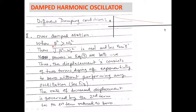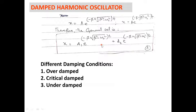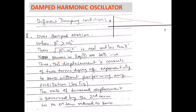First, the over-damped case. In the case of over-damped, we suppose that beta-squared is greater than omega-0-squared. This means that the square root of (beta-squared minus omega-0-squared) would be real and always less than beta. Looking at equation number 3, this term appears with a positive sign in one power and a negative sign in the other power. So both powers would be always negative.